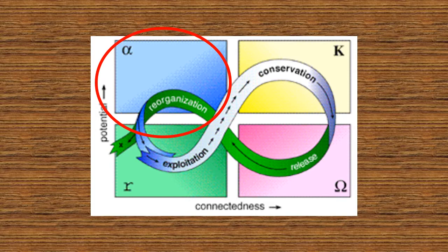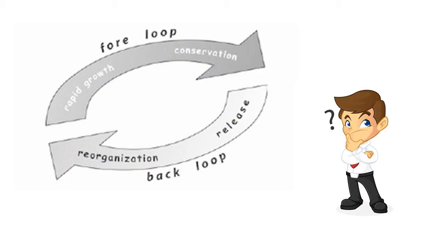Additionally, there are also two relationships within the cycle. The exploitation and conservation phases are known as the for loop. The flow between these two stages is relatively predictable and slow. The release and reorganisation phases form the back loop. It is characterised by uncertainty, loss and experimentation, and has the greatest potential for change within the system.